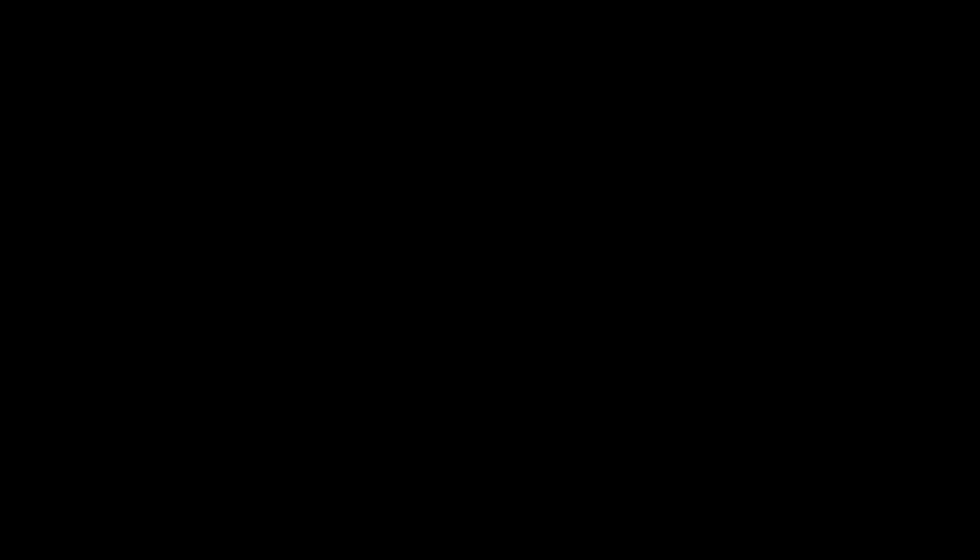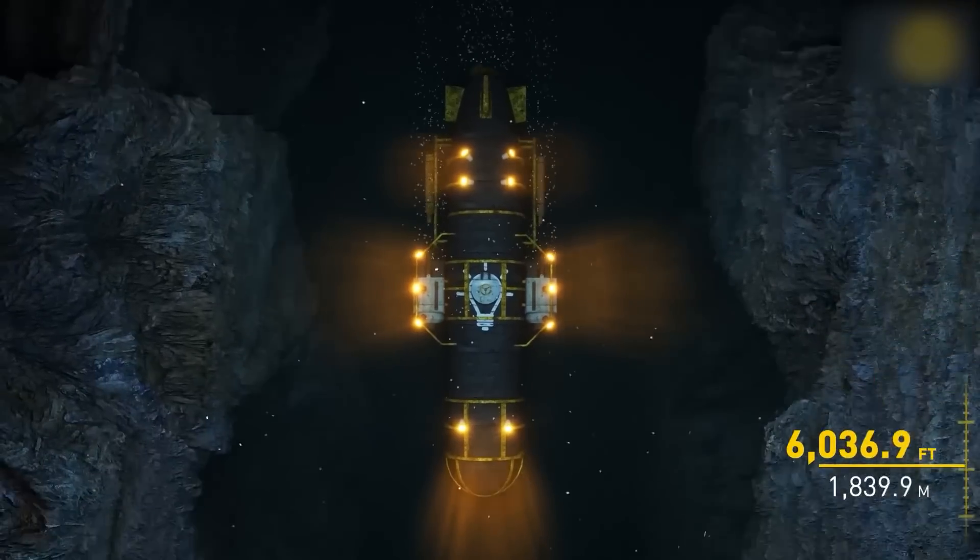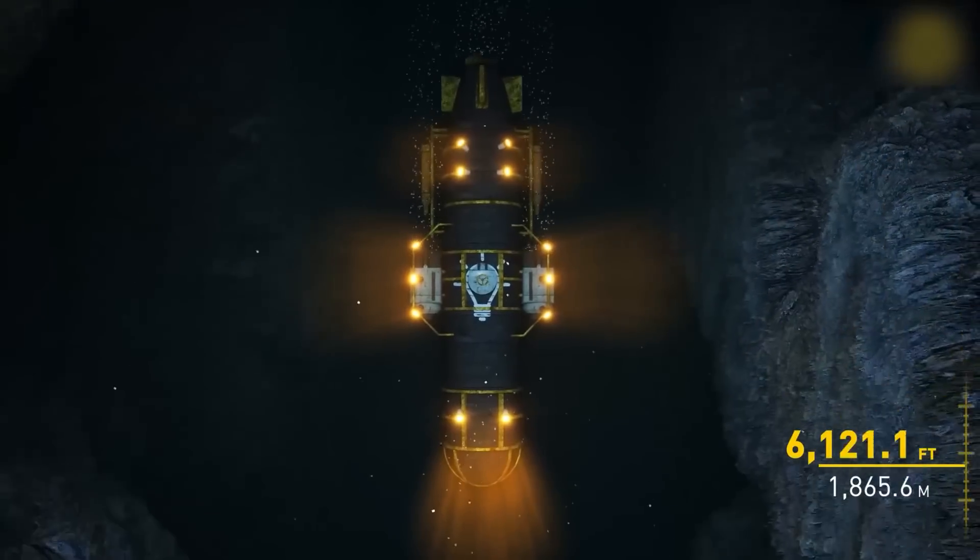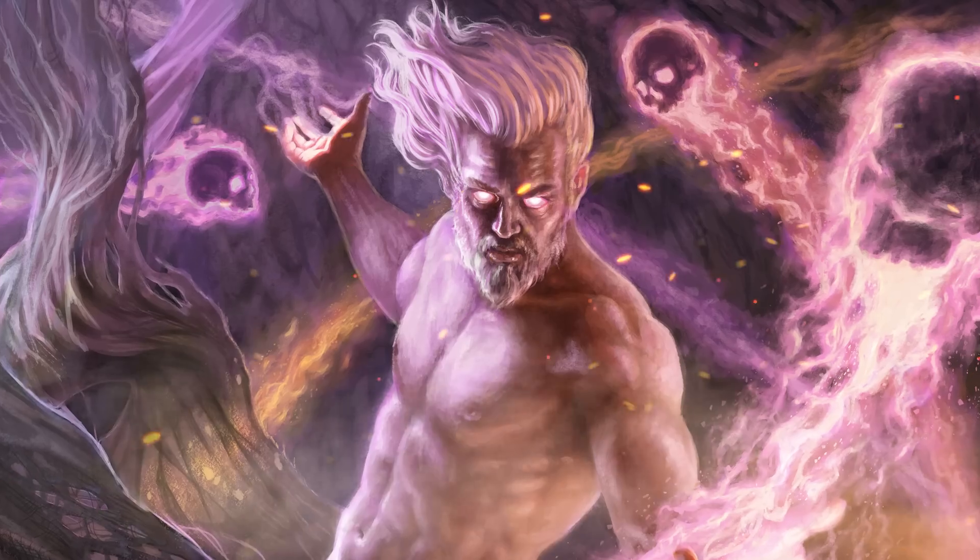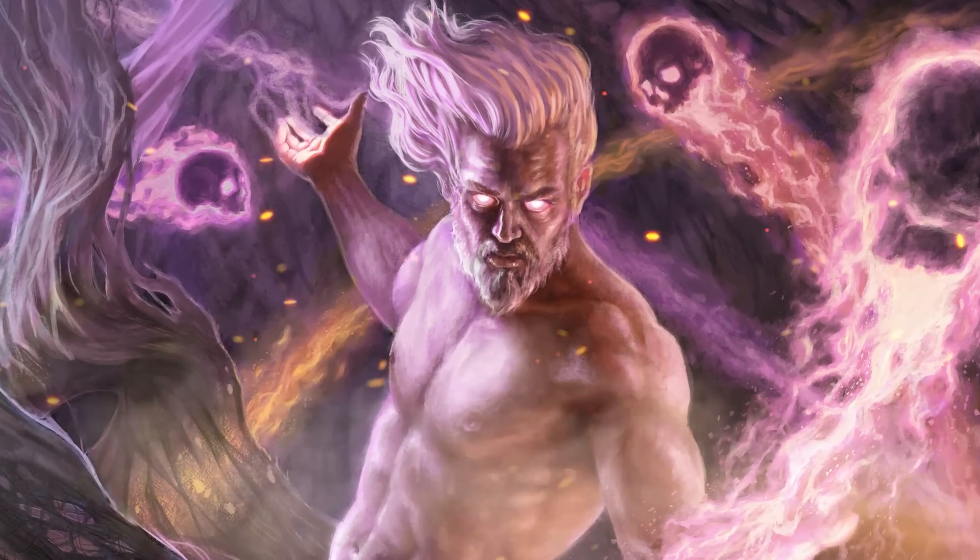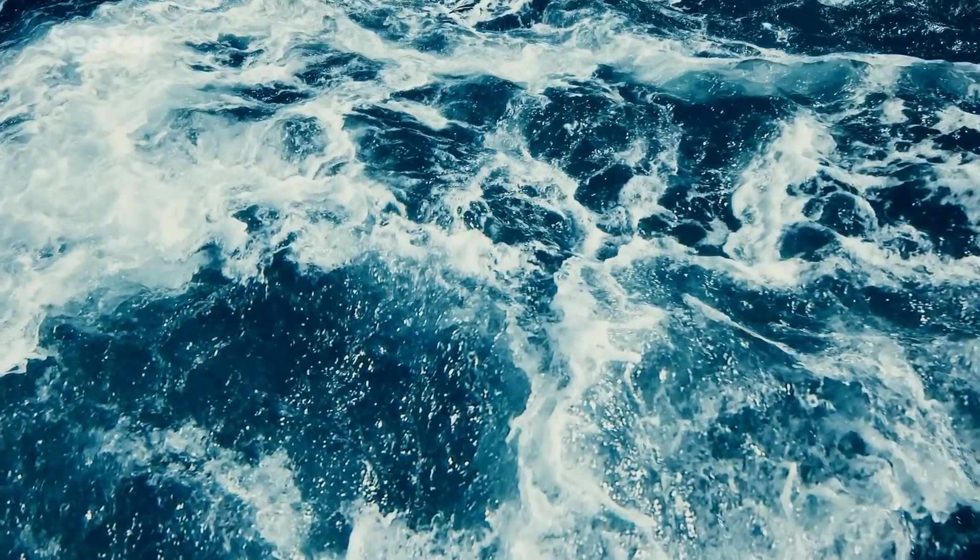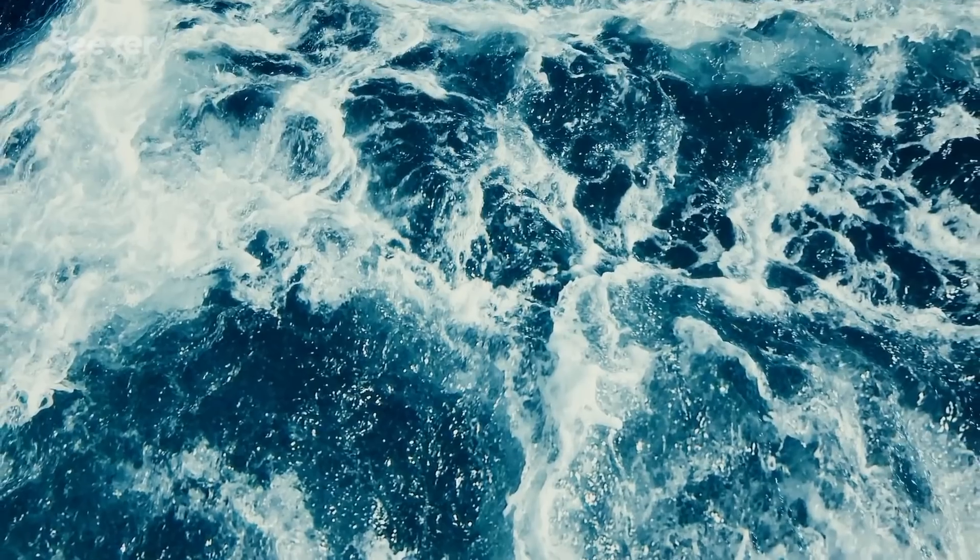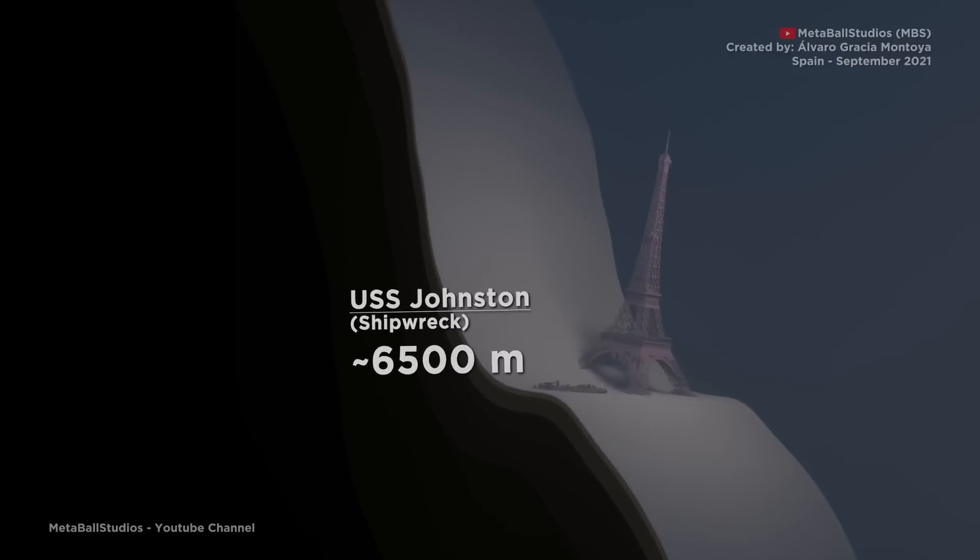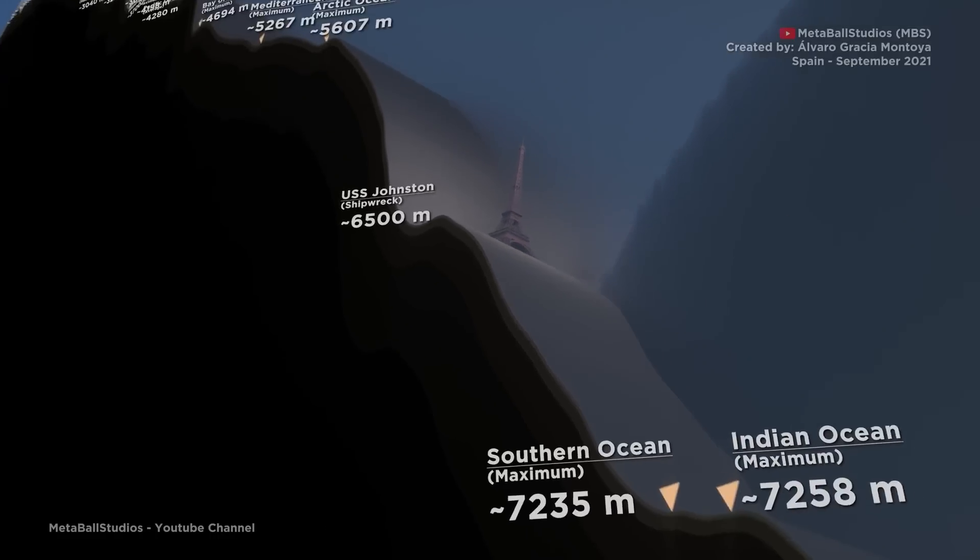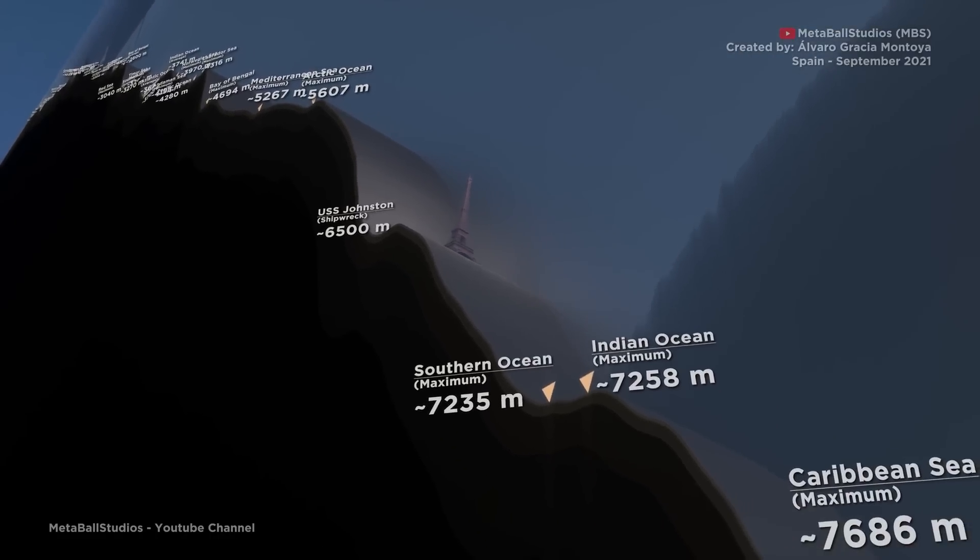The Hadal Zone, or the Hadal Pelagic Zone, to use its full scientific name, covers the extreme depths of the ocean from 6,000 to 11,000 meters. It's named after Hades, the underworld's Greek god, aptly reflecting this oceanic depth's otherworldly environment. If you were to combine all of the Hadal Zones across the world's ocean, they would be roughly equivalent to the size of Australia.